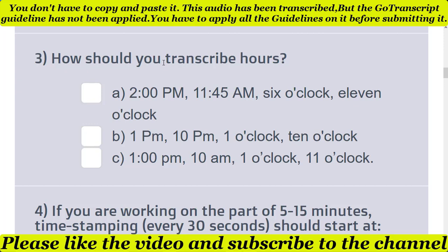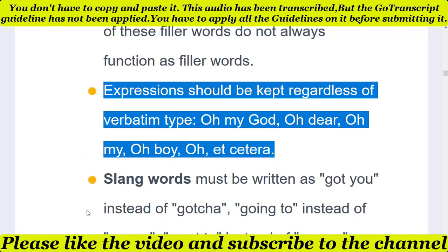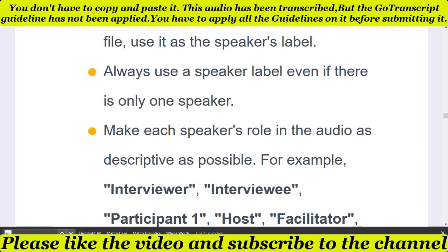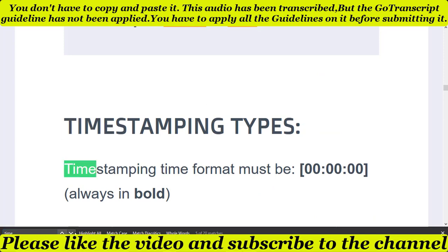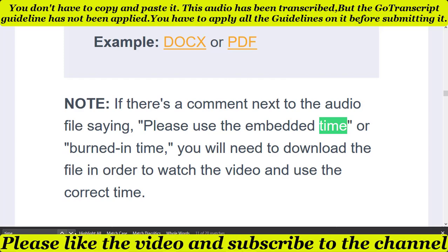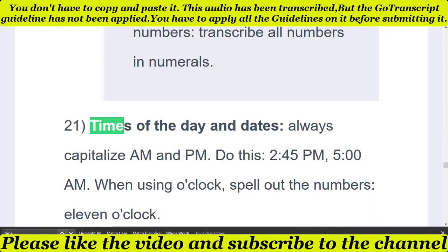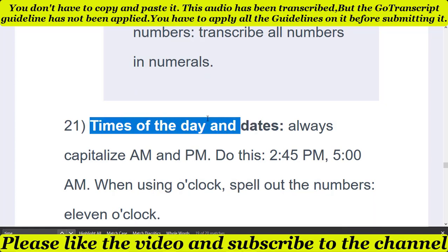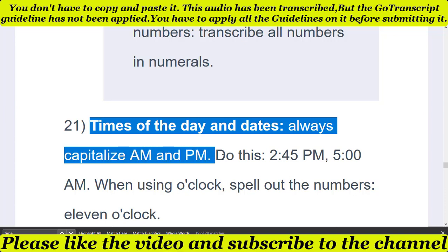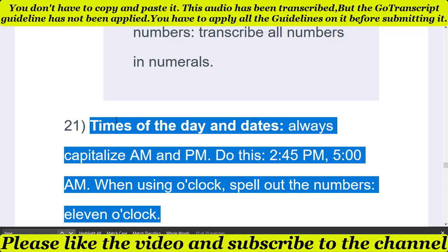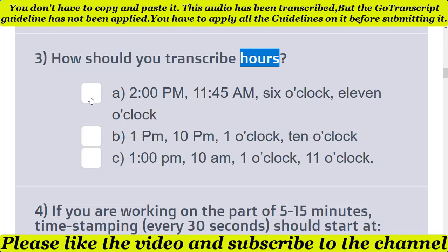The third question is: how should you transcribe hours? There are three different options. If you have any doubt related to this question, you simply read the transcription guideline. If you read the transcription guideline's time section, you get the answer to this question. Here is 'Times of the day and age.' Always capitalize AM and PM. When using o'clock, spell out the numbers — '11 o'clock.' So this is the times rule. According to the transcription guideline, the first option is correct.